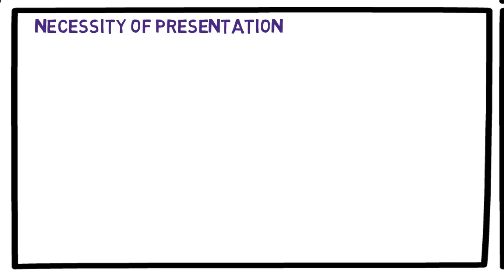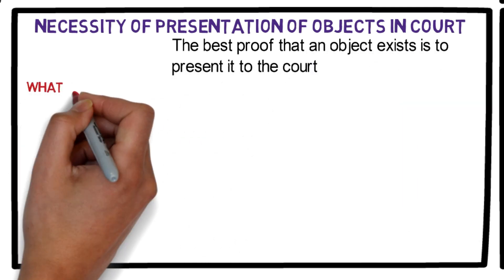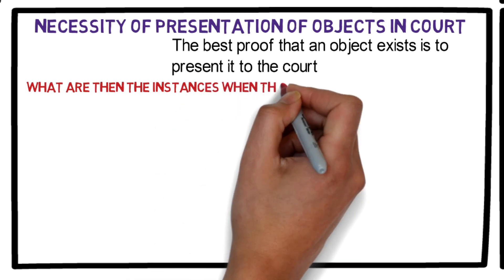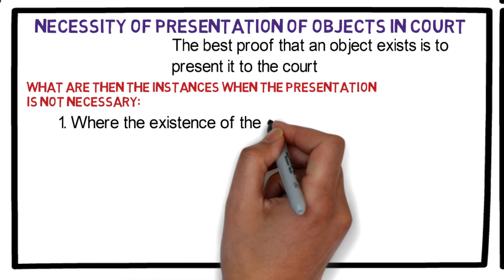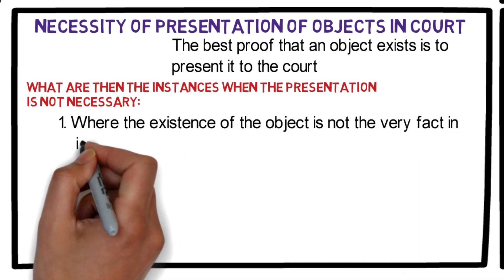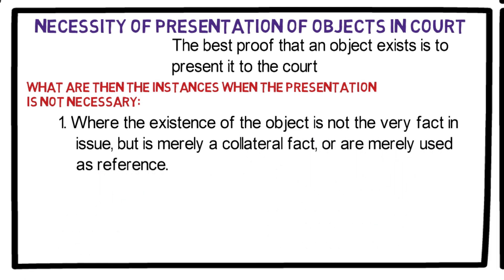Next, let us discuss the necessity of presentation of objects in court. The best proof that an object exists is to present it to the court. What are then the instances when the presentation is not necessary? One: where the existence of the object is not the very fact in issue but is merely a collateral fact or merely used as reference — for example, when a witness testifies that the accused was drinking a bottle of gin when he threatened to shoot the witness, it is not necessary to produce the bottle of gin.